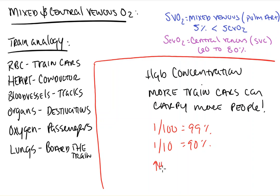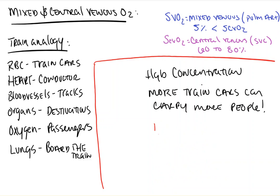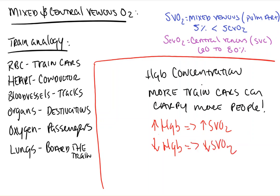So, high hemoglobin will lead to a high SVO2 as an isolated finding, and a low hemoglobin pathology will lead to a lower SVO2, which as we said can be treated with blood.